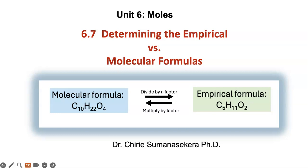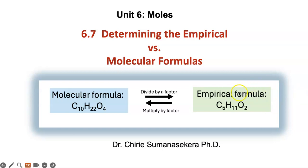Hello, this is unit 6. Today we are going to learn about 6.7, determining the empirical versus molecular formula. This picture shows you the molecular formula of a compound, and notice how the empirical formula is exactly half of it. It is the smallest whole number ratio of moles of each element in the compound. So basically I divided this by 2 and then you get C5H11O4. Since 11 can't be divided further, that is your empirical formula.